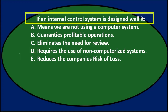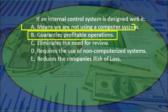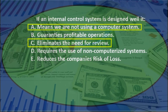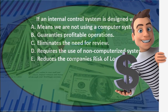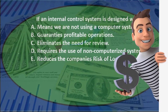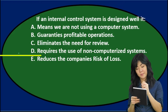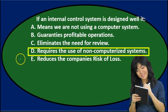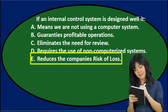Next question. If an internal control system is designed well, it: A. Means we are not using a computer system. B. Guarantees profitable operations. C. Eliminates the need for review. D. Requires the use of non-computerized systems. Or E. Reduces the company's risk of loss.